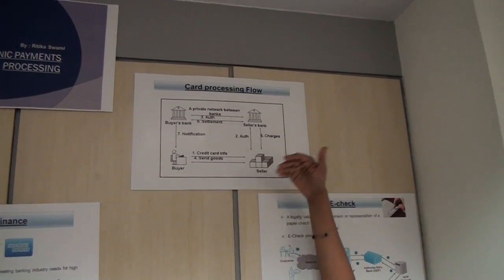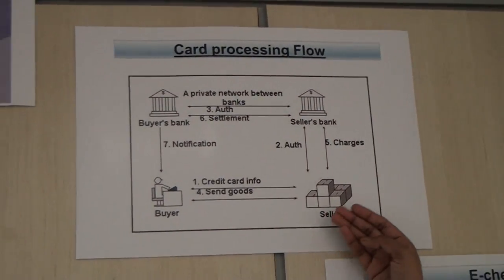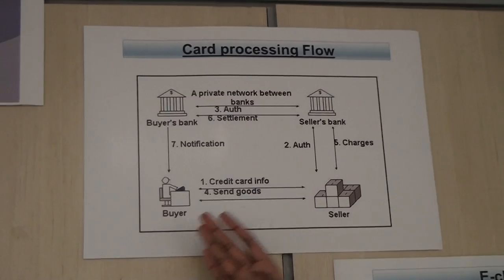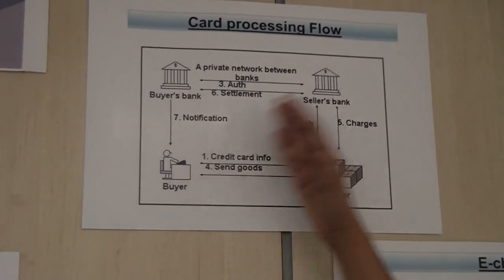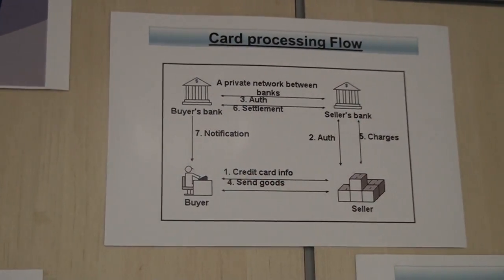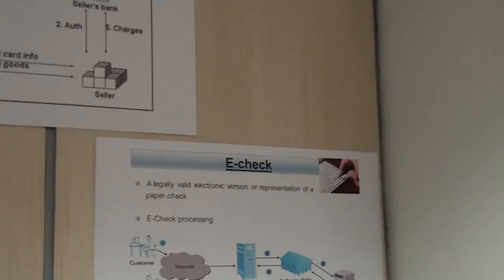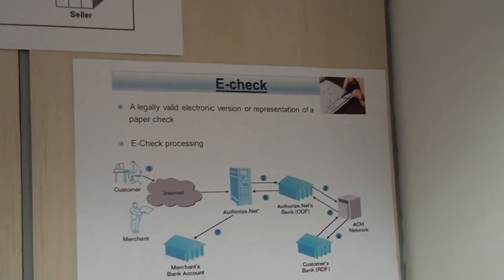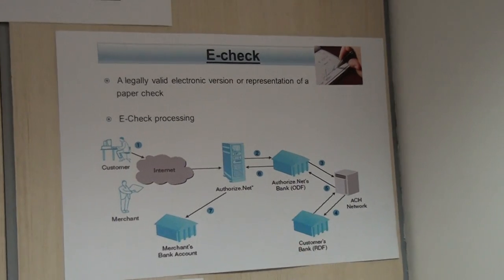Once the authentication is done, it will come back to the seller. The seller will send the goods to the buyer. And then in the background, both the banks, like buyer bank and seller bank, will do the settlement. Now, this is the first one, card processing. Now coming to the electronic check.